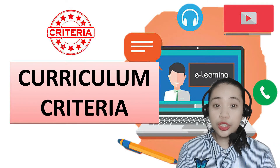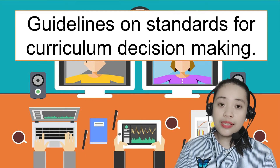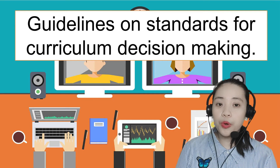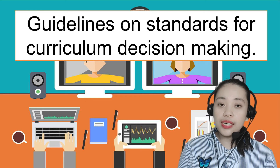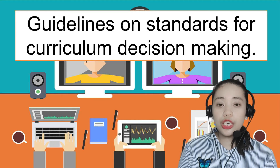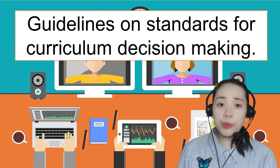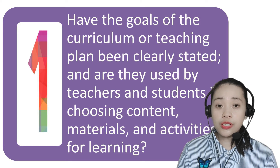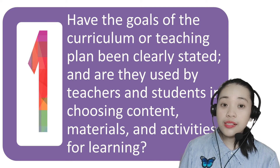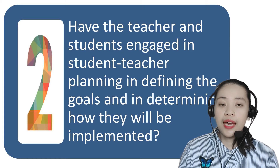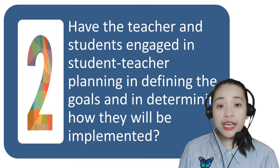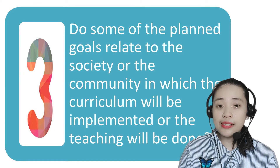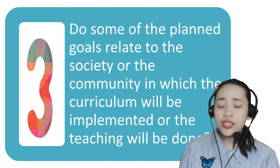Now, what are the criteria for curriculum? Curriculum criteria are guidelines and standards for curriculum decision-making. The objectives of a curriculum or teaching plan are the most important criteria, since they should be used in selecting learning experiences and evaluating learning achievement. The criteria are stated as questions: Have the goals of the curriculum been clearly stated, and are they used by teachers and students in choosing content, materials, and activities for learning? Have the teacher and students engaged in student-teacher planning in defining goals and determining how they will be implemented? Do some of the planned goals relate to the society or community in which the curriculum will be implemented?